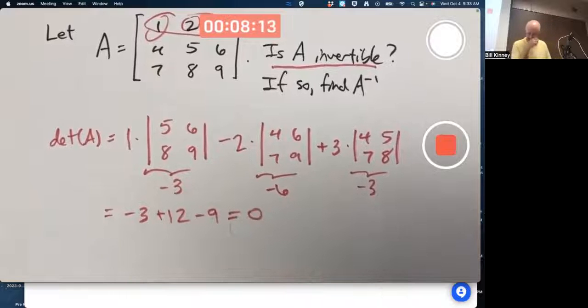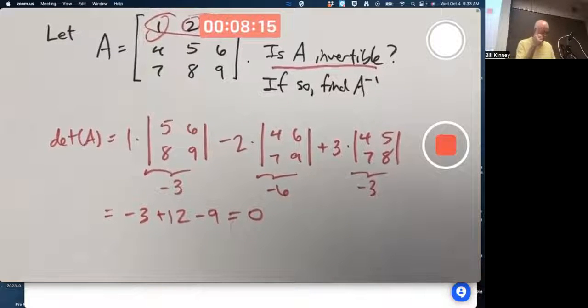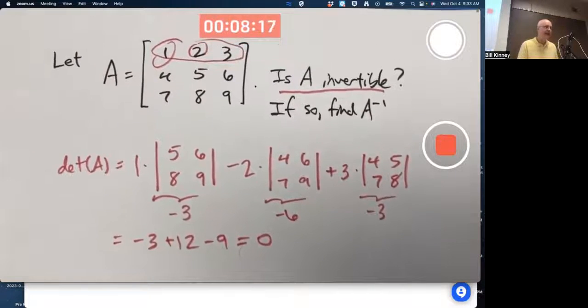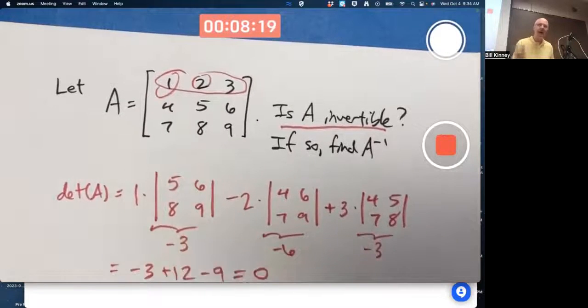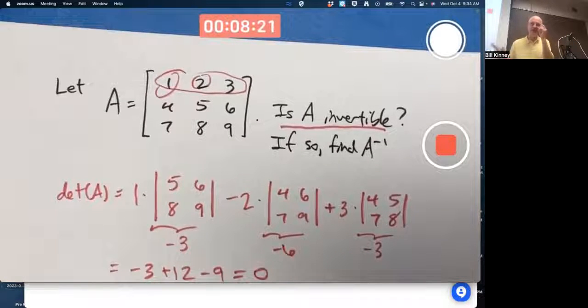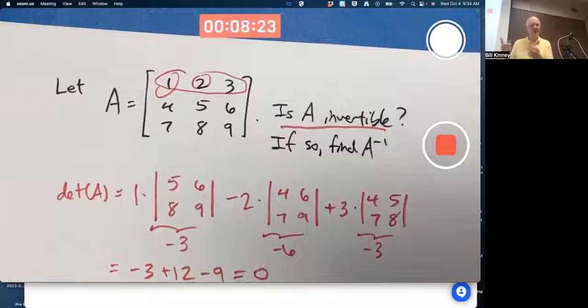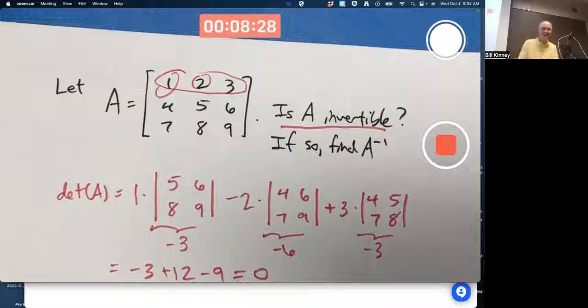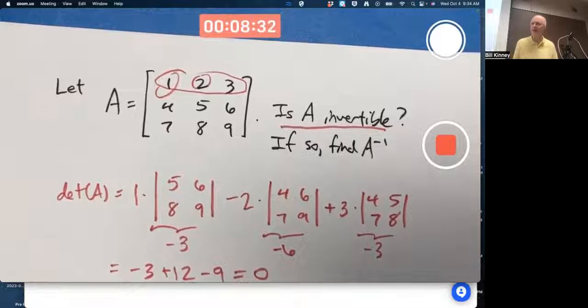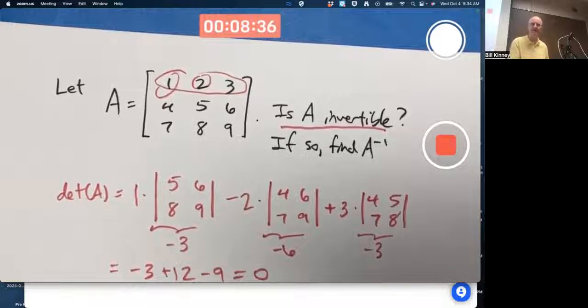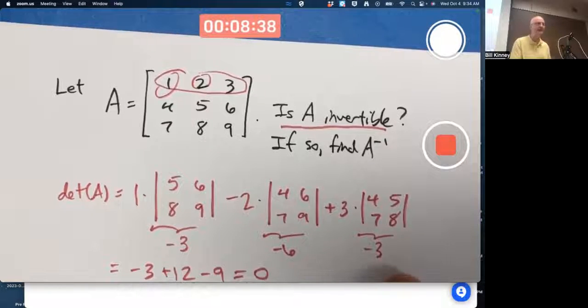Then you go to the last entry in that row. It's a three. Make sure that's a plus sign. It's alternating. Multiply by the determinant of the submatrix there, 4, 5, 7, 8. That is going to be negative. 32 minus 35. That'll be a negative three. We get negative three. Minus two times negative six will be plus 12. Then plus three times negative three will be minus nine. Yes, we do get zero. This determinant is zero.